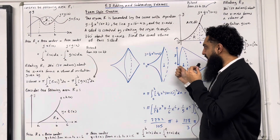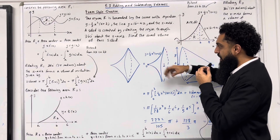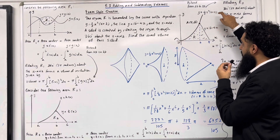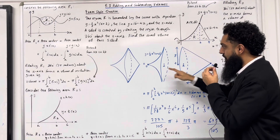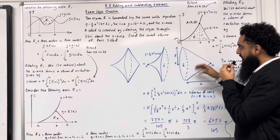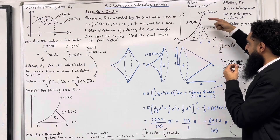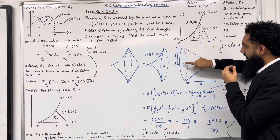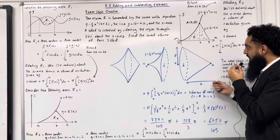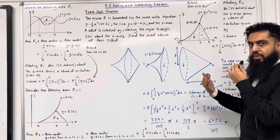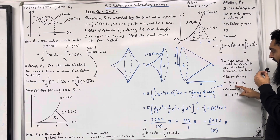This solid of revolution can be split into a sum of two solids. The first is created by rotating y = ½x²(x + 2) through 360 degrees about the x-axis between x = 0 and x = 2. The second is created by rotating the straight line y = 16 − 4x through 360 degrees between x = 2 and x = 4. The radius of the cone is the y-coordinate at the base, so r = 8, and the height is 4 − 2 = 2.